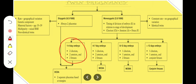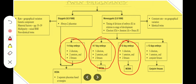When division occurs at 4 to 7 days, we have 1 chorion, 2 amnions, and 2 fetuses. If division is from 8 to 12 days, we have 1 chorion, 1 amnion, and 2 fetuses. If division occurs from more than 12 days, we have 1 chorion, 1 amnion, and we may have conjoined fetuses.